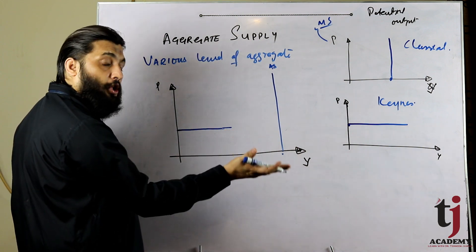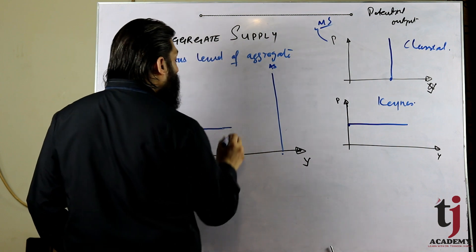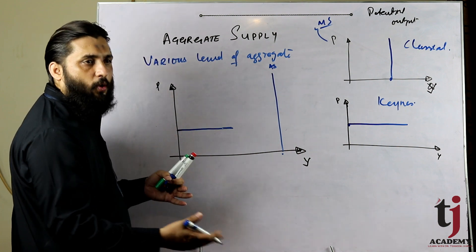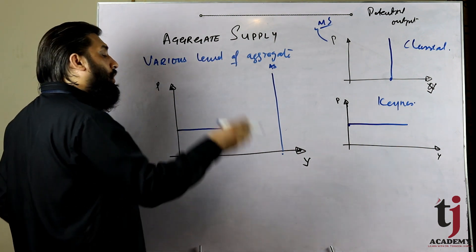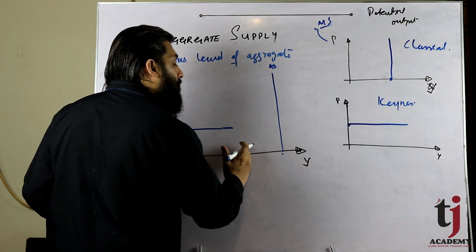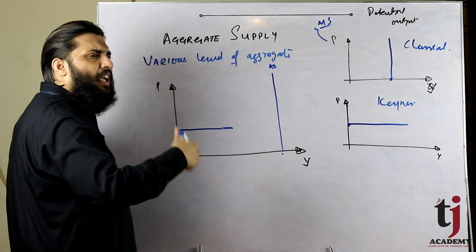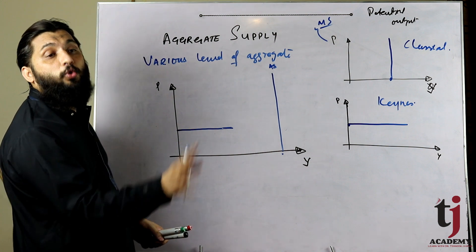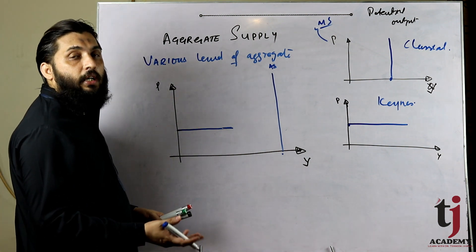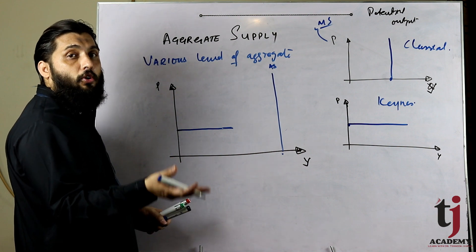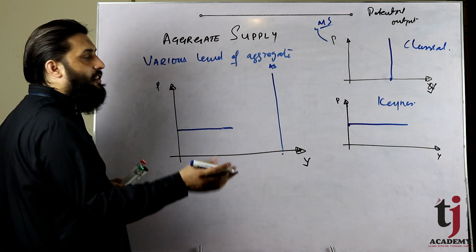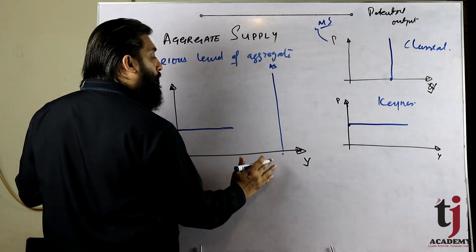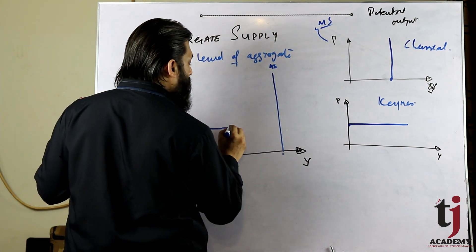लेकिन जब resources आसानी से available नहीं होंगे और किसी चीज़ की demand ज्यादा होगी, तो cost of production बढ़ना शुरू हो जाएगी। इसके साथ यह भी ध्यान रखें कि हर किसी के पास efficient resources नहीं होते। जब output potential level की तरफ move कर रहा हो और inefficient resources use होने लगें, तो unit cost बढ़ने लगती है और market का price level भी बढ़ना शुरू हो जाता है। यह intermediate range है।